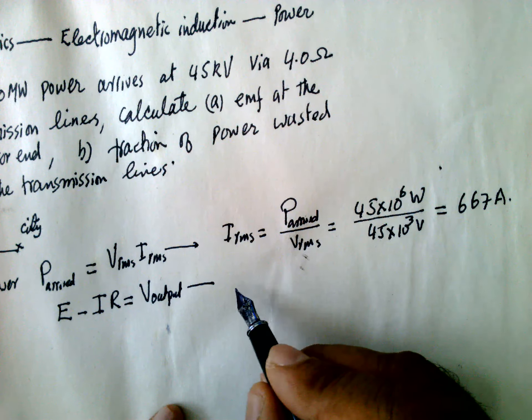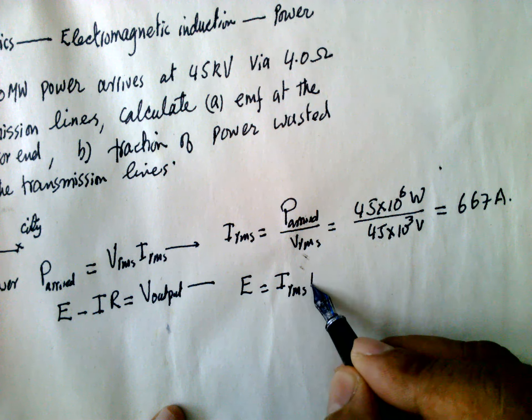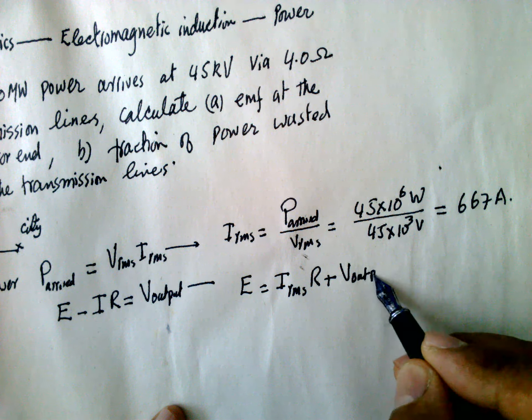And if you substitute the value of this one, so E is equal to I_rms into R plus voltage output.